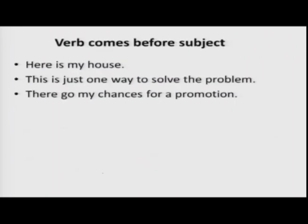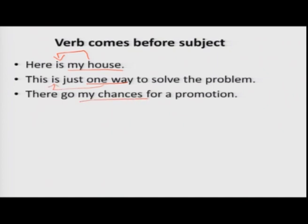In some sentences, the verb comes before the subject. Look at these examples: 'Here is my house,' 'This is just one way to solve the problem,' 'There go my chances for a promotion.' Verb in all these sentences comes first. Nevertheless, the same rules apply: if the subject is singular, the verb is singular; if the subject is plural, the verb is plural. 'My house' is singular, so the verb is singular. 'One way to solve the problem' is singular, so the verb is singular. 'My chances' is plural, so the verb is also plural.